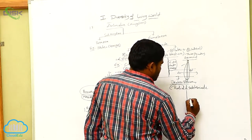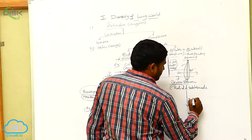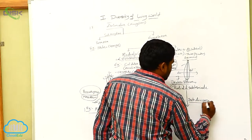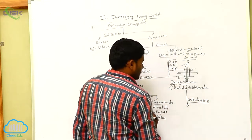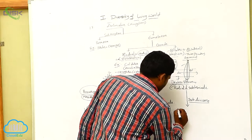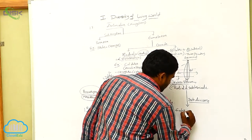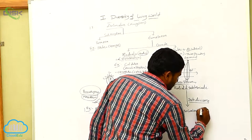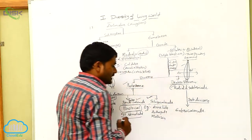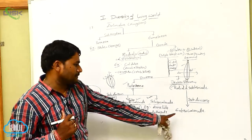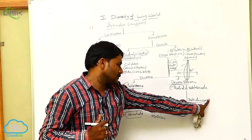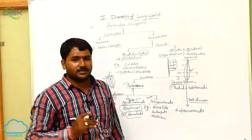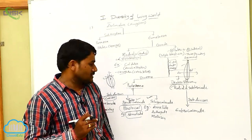There is only one subdivision here, and that is Enterocoelomata. 'Enteros' means pouches. Generally, from the mesoderm, small pouches are developed.